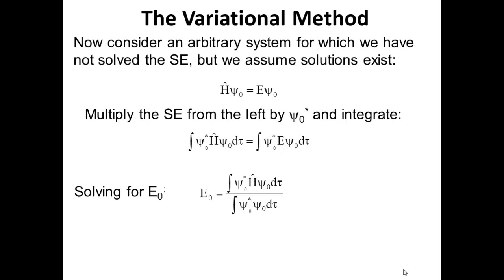We solve this equation for the ground state energy. Doing some algebra, we can pull the energy out in front of the integral on the right-hand side, and we find that the ground state energy is just a fraction: the numerator is the Hamiltonian operator acting on the wave function times the complex conjugate, integrated over all space, and the denominator is the normality integral. If we had normalized wave functions the denominator would equal one, but in the variational method we cannot pre-normalize the wave functions.